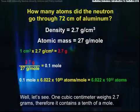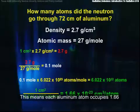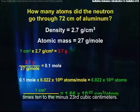One cubic centimeter weighs 2.7 grams, therefore it contains a tenth of a mole. This one cubic centimeter then contains 6.022 times 10 to the 22nd aluminum atoms. This means each aluminum atom occupies 1.66 times 10 to the minus 23rd cubic centimeters.